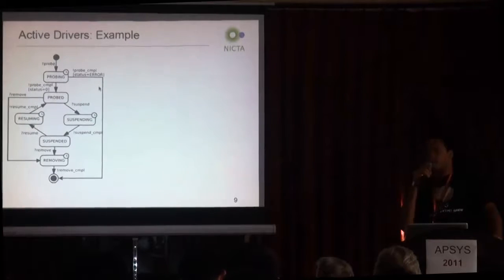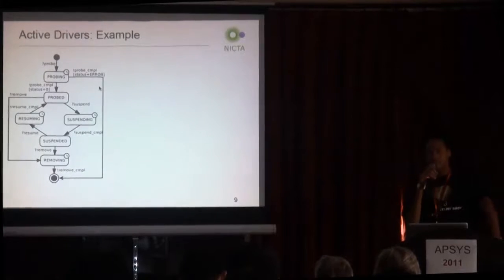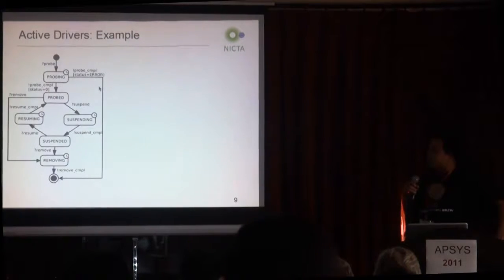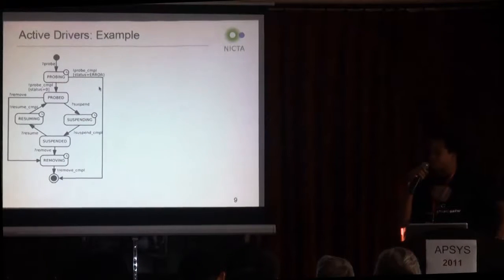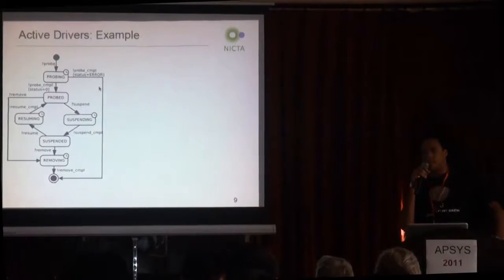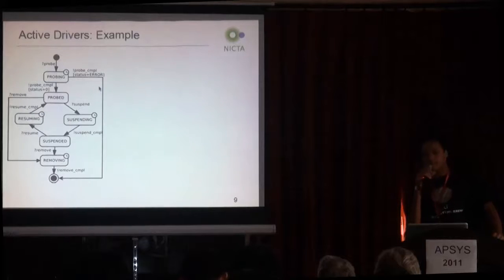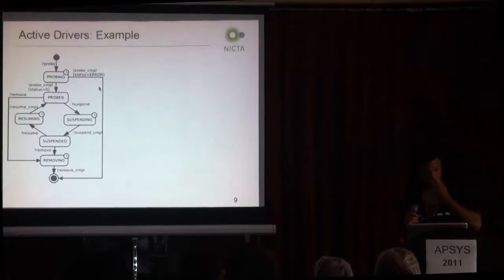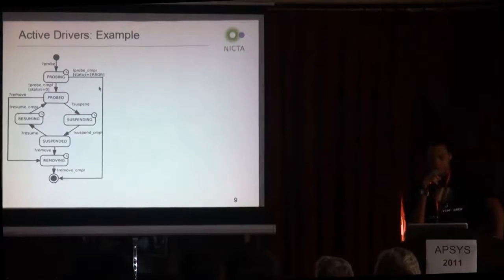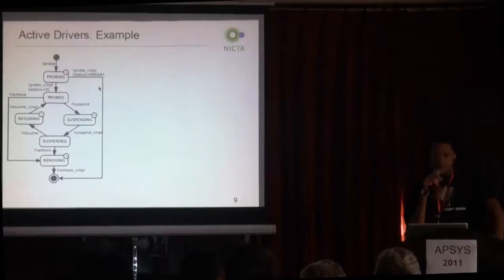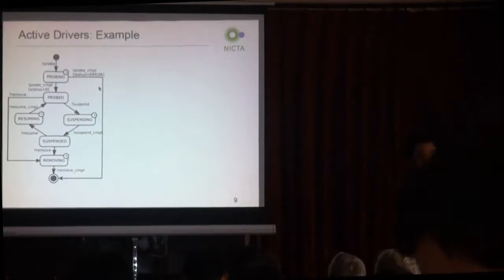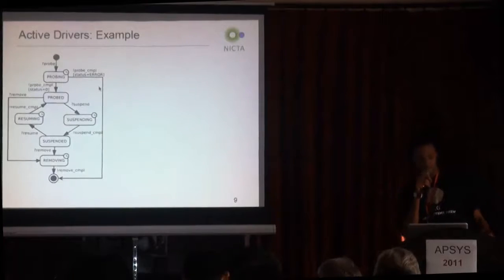Here is an example of a specification. It specifies the interaction between the driver and the Linux PCI interface. Conceptually, the protocol state machine runs in parallel with the driver. Whenever the driver sends or receives a message, it triggers a state transition on the state machine. Each state transition is a message. When the transition name starts with a question mark, it means the driver is receiving a message from the operating system. When the transition name starts with an exclamation mark, the driver is sending a message to the operating system.